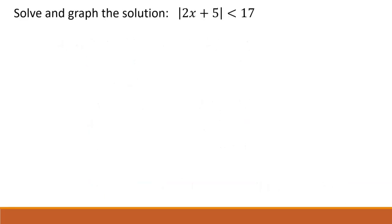Here's our next example: solve and graph the solution to the absolute value of 2x plus 5 is less than 17. Now we have an absolute value less than a number, which means the distance from 0 has to be within two values, negative 17 or positive 17. So negative 17 is less than 2x plus 5, which is less than positive 17.